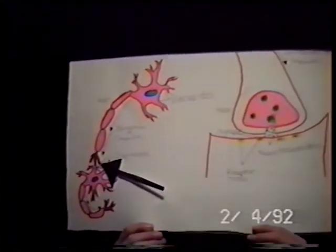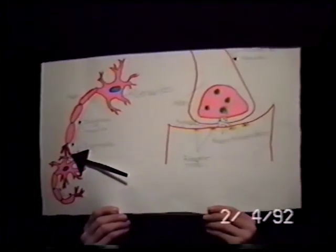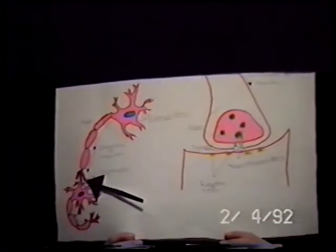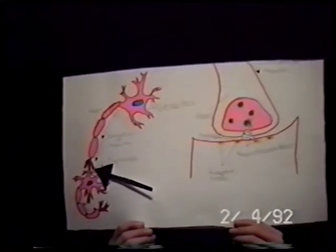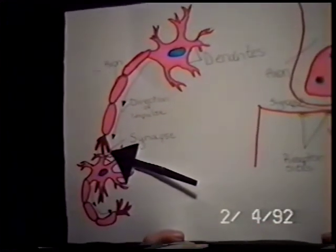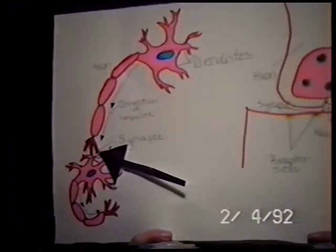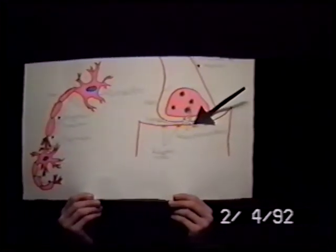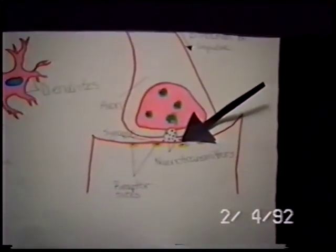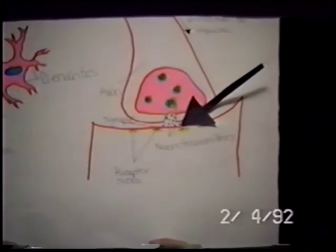Neurons are not connected directly together. There is a gap of space between the axon and the dendrites called a synapse, or synaptic cleft. When an impulse has to travel across the synaptic cleft, it does so with neurotransmitters. When there is a stimulus, these vesicles burst, releasing chemicals that carry the impulses across the synapse between the axons to the dendrites.